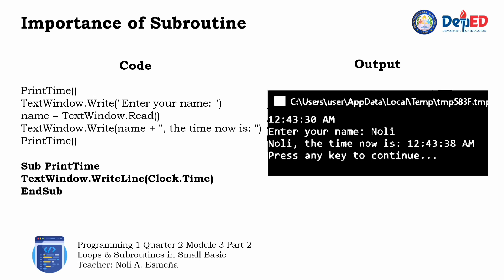The importance of subroutine can be highlighted by calling it multiple times in a code. As we can see in our sample program, a subroutine called print time is made. This subroutine displays the current time. But looking at the output of the program, time is displayed two times.